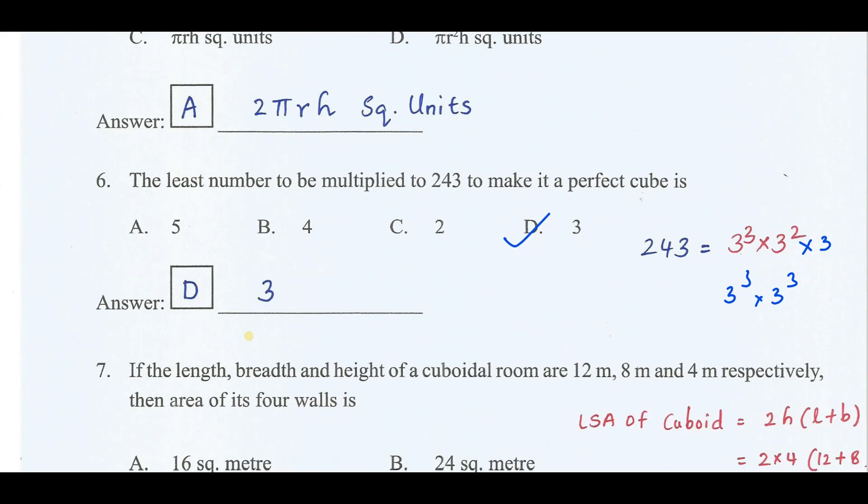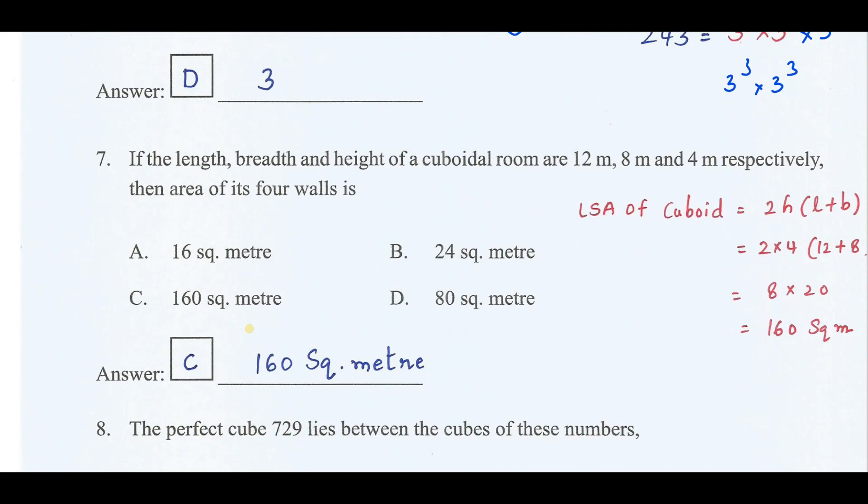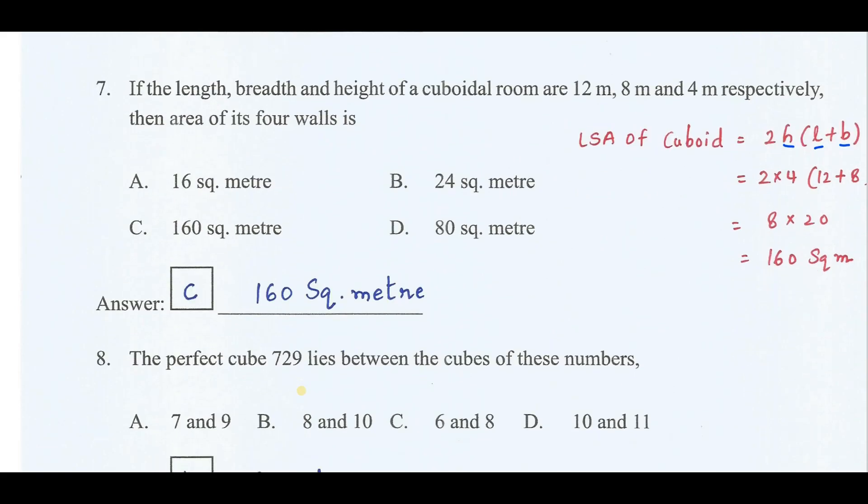The length, breadth and height of a cuboidal room are 12, 8 and 4 cm respectively. Then the area of 4 walls we need to find out the lateral surface area of cuboid, that is 2h into l plus b. H is 4, l is 12, breadth is 8. By simplifying we get 160 square meters. Therefore the correct answer is option C.